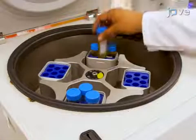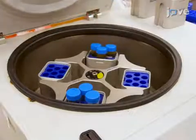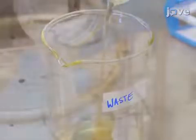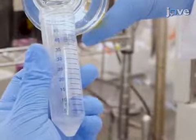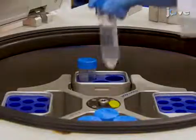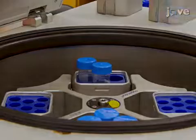Centrifuge at 1000 times G and 21 degrees Celsius for 5 minutes. Discard the supernatant. Add 10 mL of sterile water and reconstitute the pellet by vortexing. Centrifuge at 1000 times G and 21 degrees Celsius for 5 minutes.